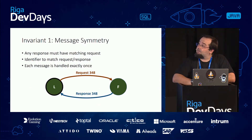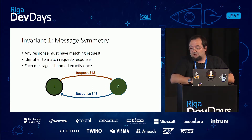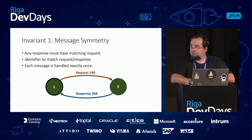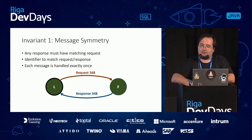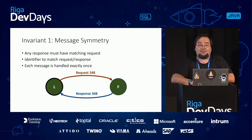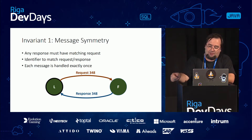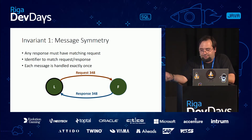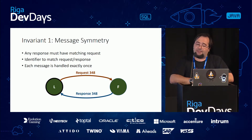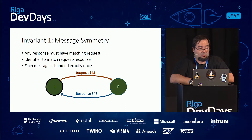That's roughly how the Raft protocol works - it's not a complicated idea. If you look at the PhD thesis, the title is 'an understandable consensus algorithm.' If you try to look at its alternatives like Paxos, even people who successfully implemented Paxos do not understand how it works because it's so complicated and convoluted. Raft is pretty easy to understand. There are invariants that need to be upheld when you implement the Raft protocol.